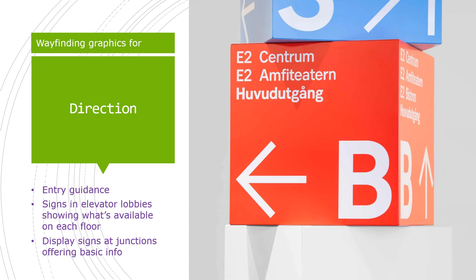Next, directional signs. Directional wayfinding graphics are what most people think of when they think about a wayfinding strategy. These signs keep people moving towards their destination, appearing at junctions, being directional, and giving guidance. Think about signs in elevator lobbies showing what's available on each floor, or display signs at junctions offering basic directions like 'bathrooms to the left' or 'elevator straight ahead.'